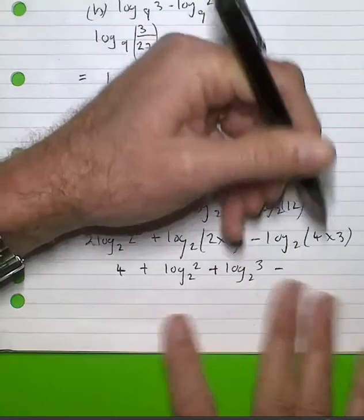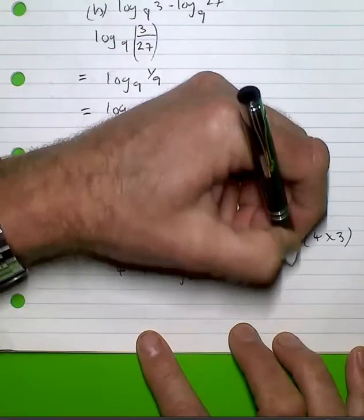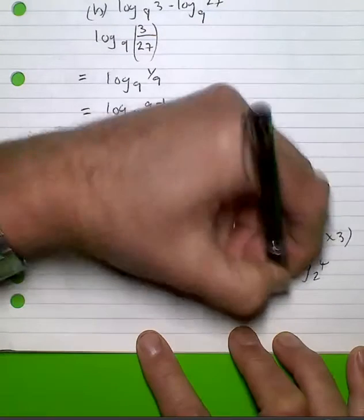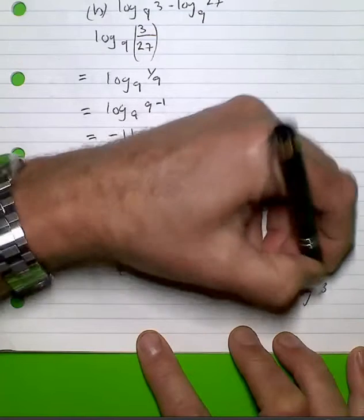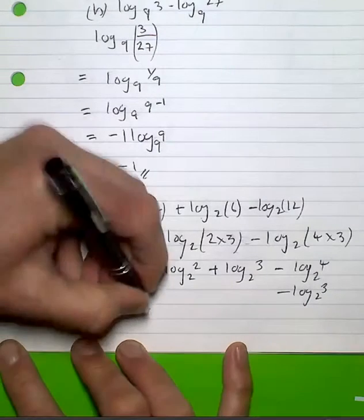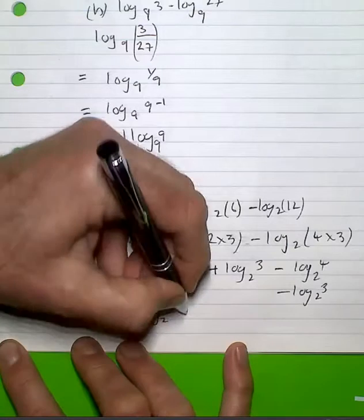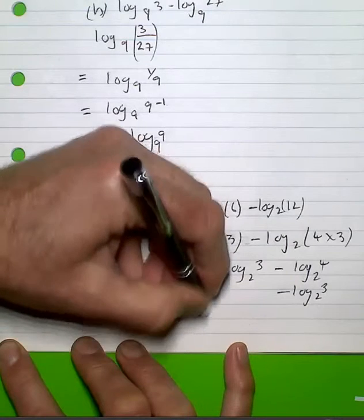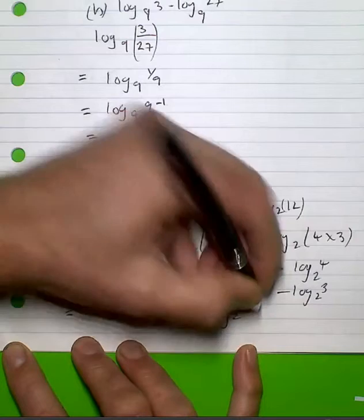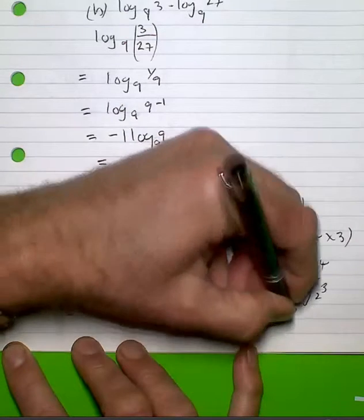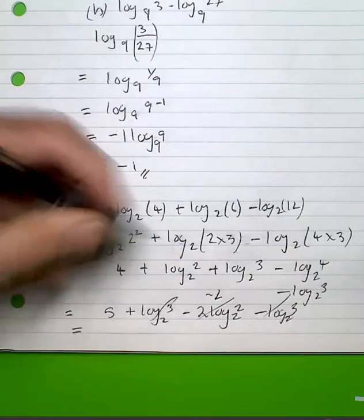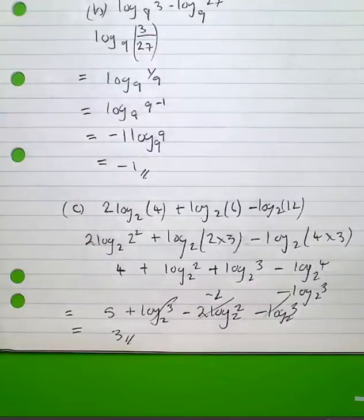And log base 2 of 2 plus log base 2 of 3, take, that's going to be log base 2 of 4 minus log base 2 of 3, which is 5, plus log base 2 of 3, take 2, log base 2 of 2, which simply is take 2 take log base 2 of 3, which ends up giving me a total of 3 as my answer.